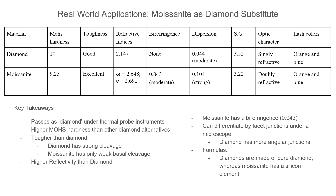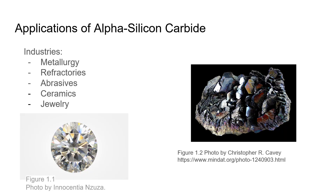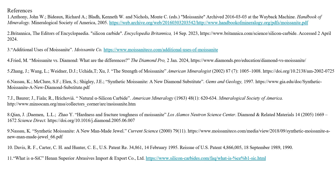It is also worth noting that the formulas between the two differ slightly, as diamond does not contain silicon. In conclusion, moissanite is a great gem for jewelry making because it can resist everyday wear, it is beautiful, and it is even cheaper than diamond. Finally, applications of alpha silicon carbide include metallurgy, refractories, abrasives, ceramics, and jewelry. This concludes the presentation.